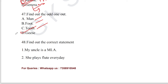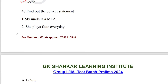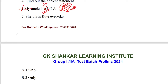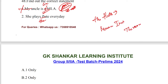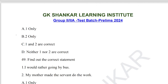Question number 48: find out the correct statement. Statement 1: 'My uncle is a MLA' — this is incorrect because the sound of M is a vowel sound, so we must use 'an': 'My uncle is an MLA.' Statement 2: 'She plays flute every day' — this is incorrect because for musical instruments we must use 'the': 'She plays the flute.' Both statements are incorrect. Option D, neither one nor two are correct, is the answer.